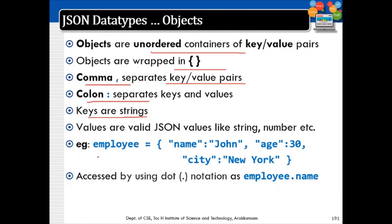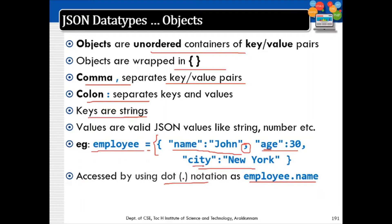Here is an example of an object. The employee object is declared with curly braces containing name-value pairs: name equal to 'John', then a comma, age 30, city 'New York'. It is accessed by dot notation — employee.name, employee.age, or employee.city. This is how objects are created and accessed in JSON.